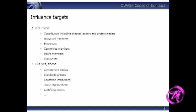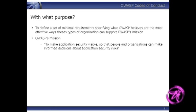At the moment, these are the types of groups we're trying to target: government bodies, standards organisations, standards groups, education institutions, trade organisations, professional membership and industrial sector membership organisations, and application security training and certifying bodies. The idea is: what could all these sorts of organisations do? If OWASP said, what would be the top five things that each of these types of organisations could do to support OWASP's mission — what would those be?